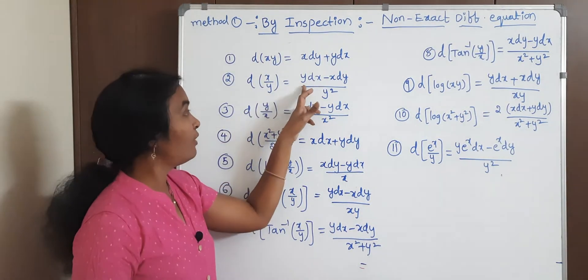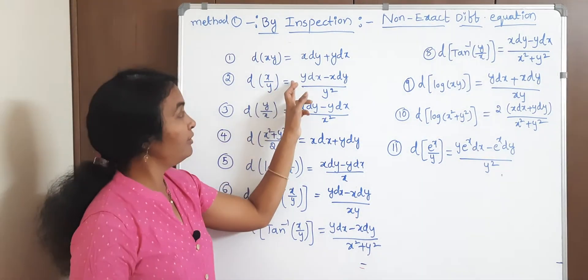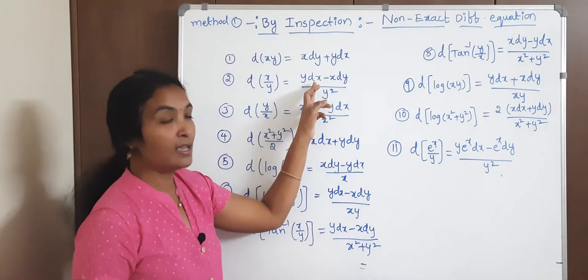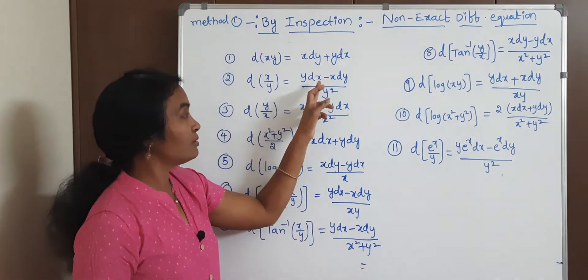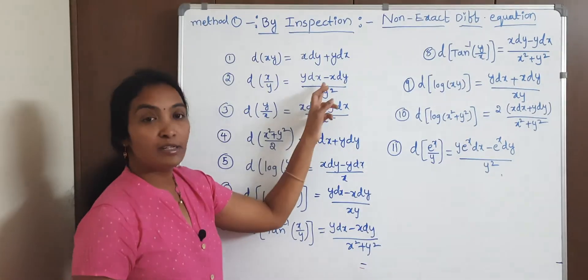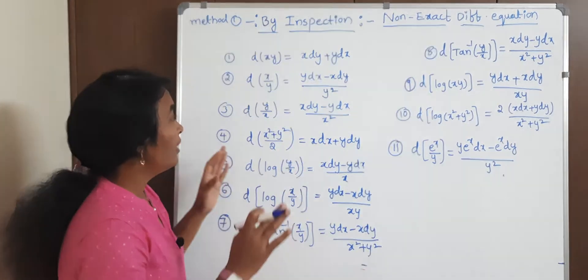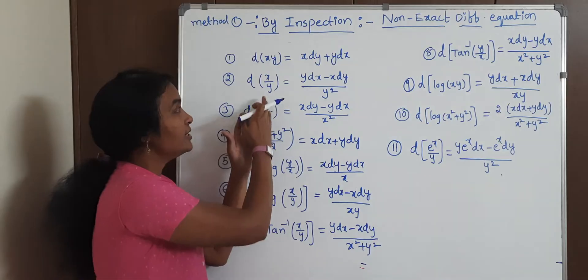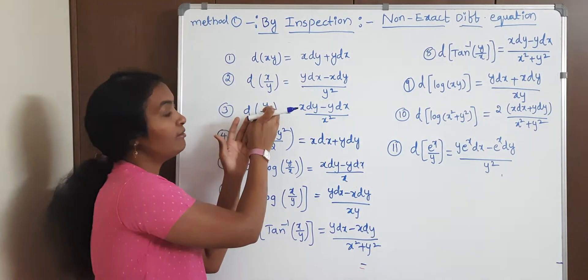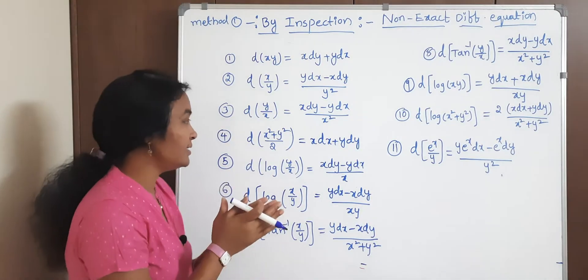Applying the derivative of u/v: v·u' minus u·v' by v². For x/y: y·dx minus x·dy divided by y². Same like this — in the place of x put y and in the place of y put x, you get the derivative of y/x.